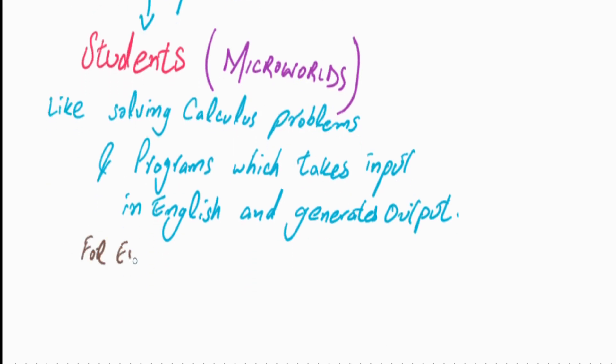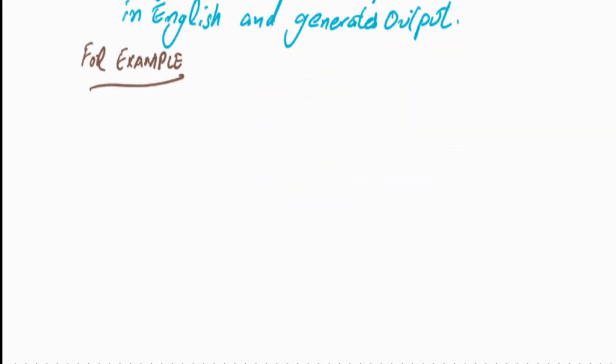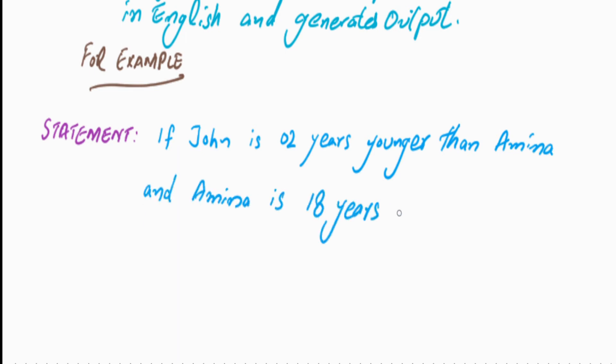Let's understand such programs with an example. If you ask a program, if John is 2 years younger than Amina and Amina is 18 years old, then what is the age of John? The program will answer, John is 16 years old.